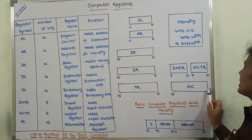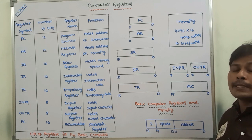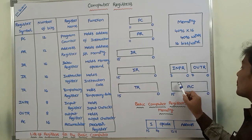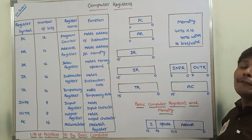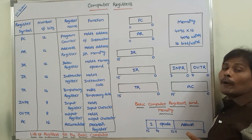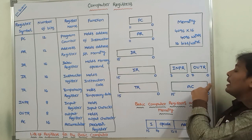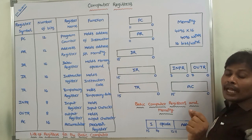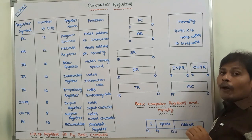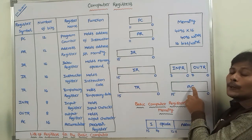The accumulator is called the processor register and is used for processing data. During the processing of data, if any operand is required, sometimes the operands are stored in the accumulator. It contains 16 bits, from bit 0 to 15, and is denoted by AC. Sometimes the operand is stored in the accumulator. If any intermediate result occurs, that result is also stored in the accumulator. After performing the operation, whatever result we get is also stored in the accumulator.